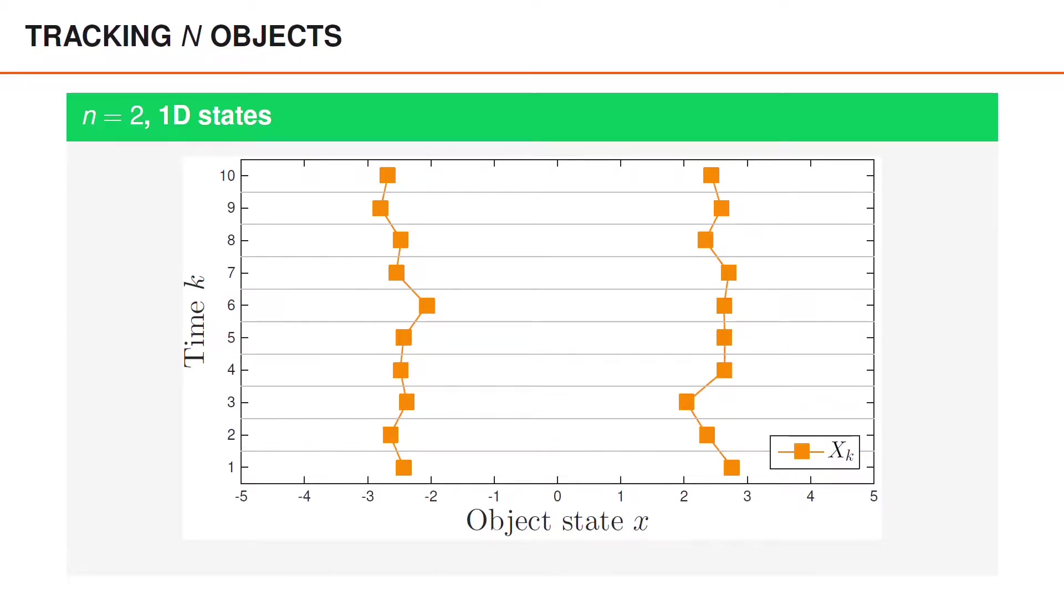Let's illustrate the problem that we wish to solve with an example. So here we have two objects with one-dimensional states and we have a timeline that goes from time 1 to time 10. Here the states for the two objects are shown as orange squares and they're connected over time by orange lines that show how the object state evolves over time.